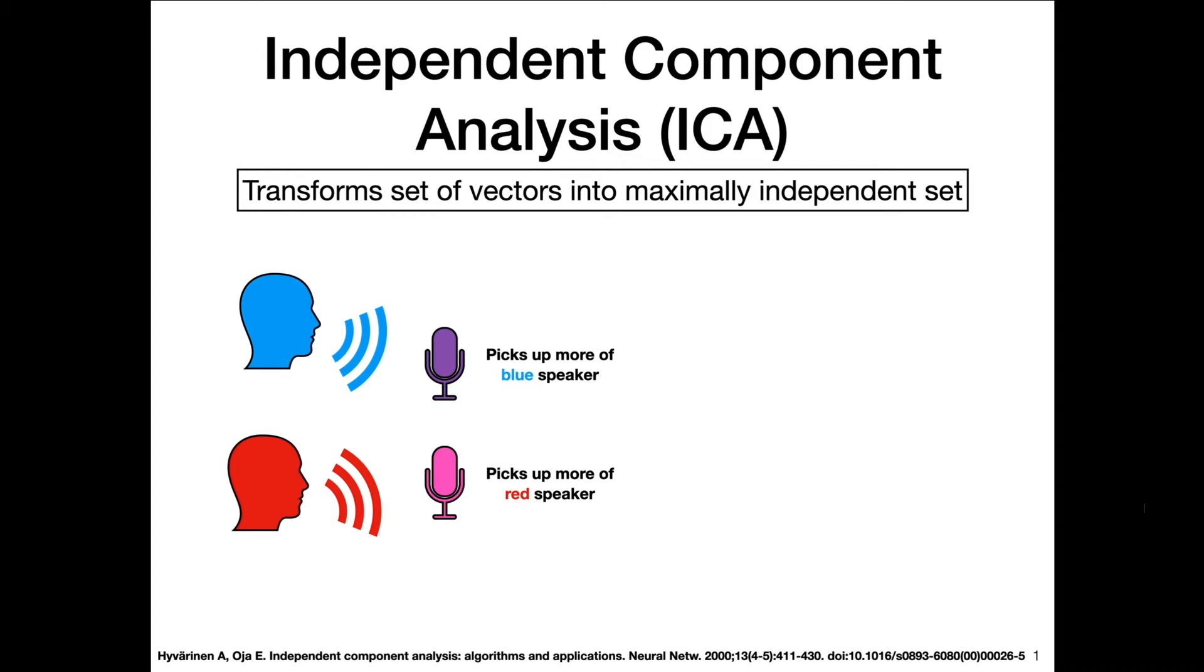The problem is, how can we take these audio recordings that have both speakers, both sides of the conversation mixed together, and separate it out to two audio files, each of which only contain audio from a single speaker? That's exactly what Independent Component Analysis does. It transforms a set of vectors, the recorded audio by these two microphones, into a maximally independent set. You have the purple and pink audio signals, then they get translated to the sources of the audio, which was the speech from the blue speaker and then the speech of the red speaker.